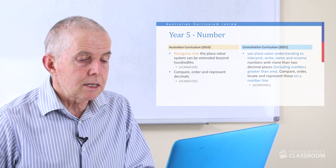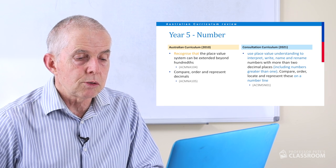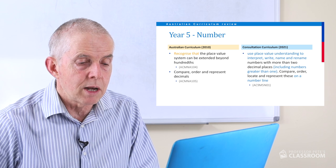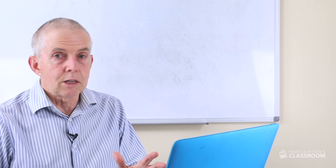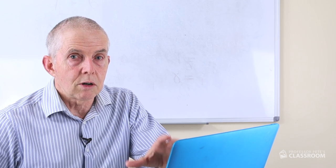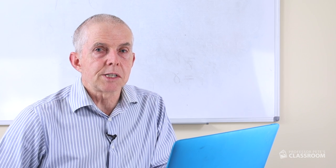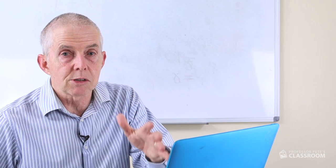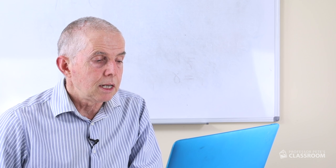Let's look first at the first number content descriptor. We are looking at place value: use place value understanding to interpret, write, name and rename numbers with more than two decimal places, including numbers greater than one. Compare, order and locate and represent these on a number line. I just like the list of verbs — there are so many different activities you can ask students to do. You could teach for a long time just on that particular content descriptor. It's about having a deeper understanding of place value beyond hundreds, and it doesn't say when to stop, so we can go to thousandths, ten thousandths, hundred thousandths, millionths — let the students see that these numbers carry on indefinitely.